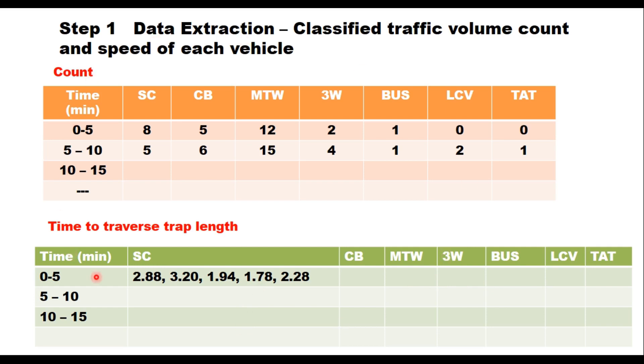Now this can be done by running the video on a large TV screen manually or you can use some software. You can write your own software or use macro excel sheet to find out this time up to the accuracy of 0.01 seconds. Here you need to do frame by frame analysis of the videos.